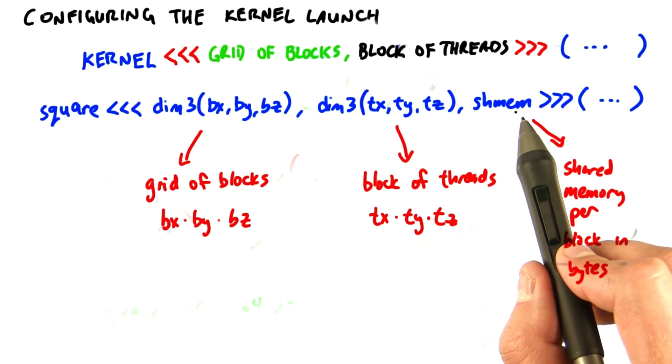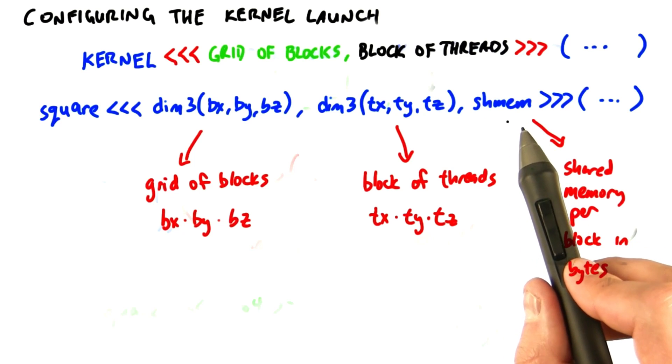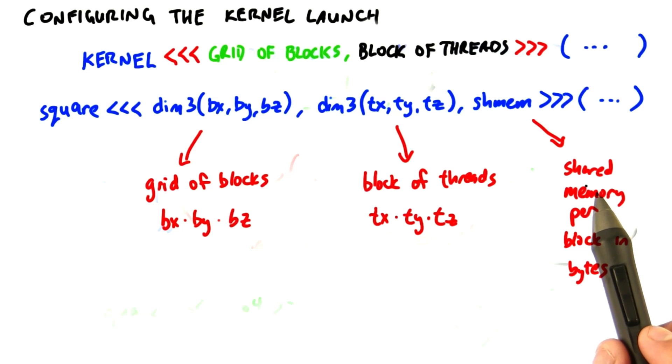Finally, there's a third argument that defaults to zero if you don't use it, and we're not going to cover it specifically today. It's the amount of shared memory in bytes allocated per thread block.